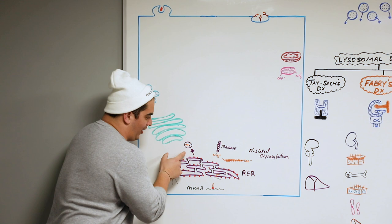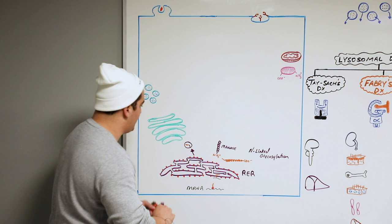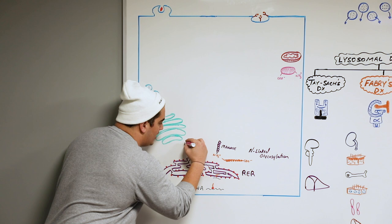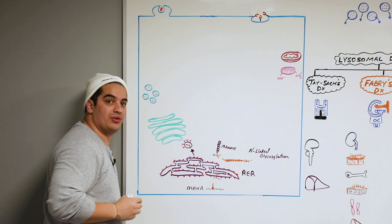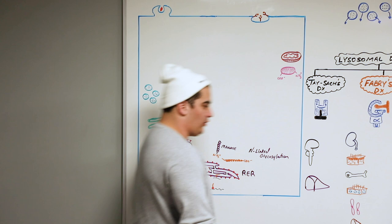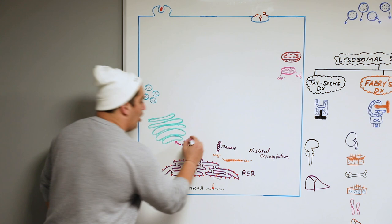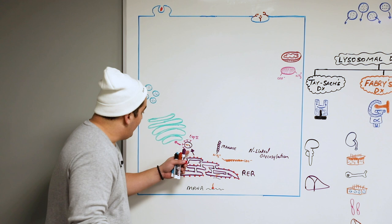From the rough ER, we send this vesicle to the Golgi. Very important, especially for USMLE Step 1 — there are special proteins found on these vesicles going from the rough ER towards the Golgi. These proteins guide the vesicle like a magnet right to the Golgi, and they are called COP2 proteins. They bind to the vesicle of the rough ER and take it to the Golgi.